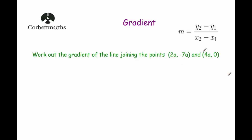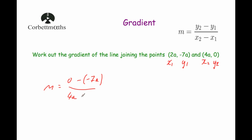Our next question has some algebra involved: work out the gradient of the line joining the points (2a, −7a) and (4a, 0). Labelling x1, y1 and x2, y2, we get m equals y2 minus y1 over x2 minus x1, which is 0 minus (−7a) over 4a minus 2a. That's 7a over 2a. The a's cancel because we're dividing, giving us 7 over 2, or 3.5. So the gradient of the line is 7/2.